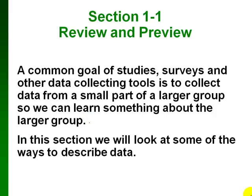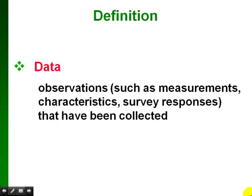In this section we will look at some of the ways to describe data. When we talk about data, we mean observations — things like measurements, characteristics that we can see about a group, and survey responses.